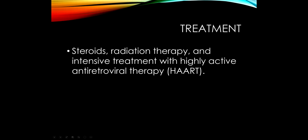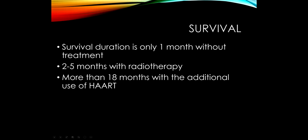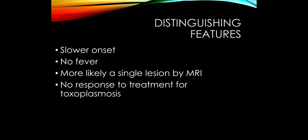CNS lymphoma is more likely to present with a single large, solitary lesion, compared to toxoplasmosis where we always see multiple lesions. Treatment includes steroids, radiation, and antiretroviral therapy, but this condition is much more serious than toxoplasmosis. Without treatment, survival is about a month; with radiation, two to five months; with additional treatment, sometimes more than 18 months. Distinguishing features of CNS lymphoma: slower onset, no fever, more likely a single lesion. You always assume lymphoma when treating for toxoplasmosis and the patient is not getting better.